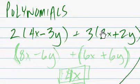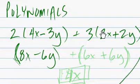And it's pretty much a multiplication problem at this point, so it becomes 8x minus 6y. We'll go ahead and keep that in our parentheses for the time being, plus 6x plus 6y.